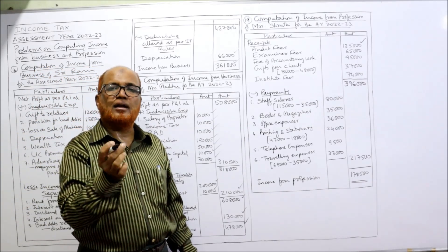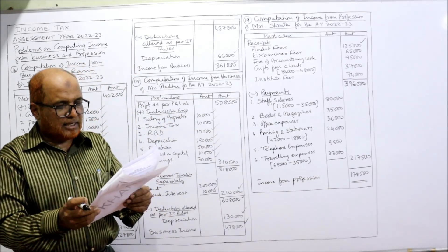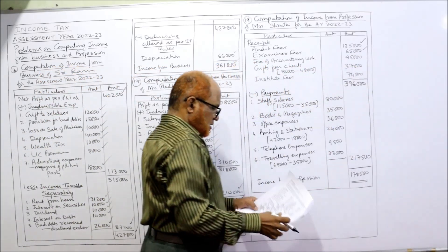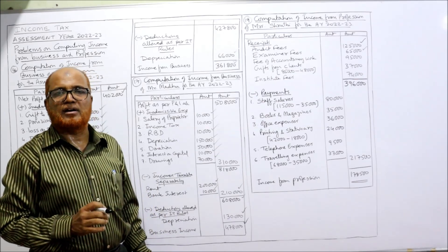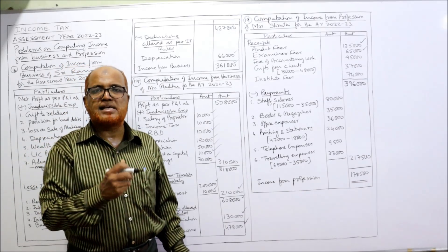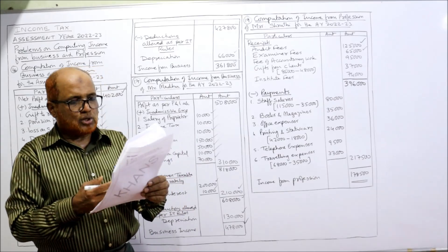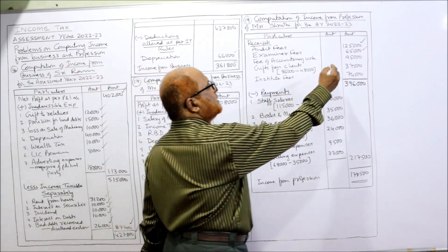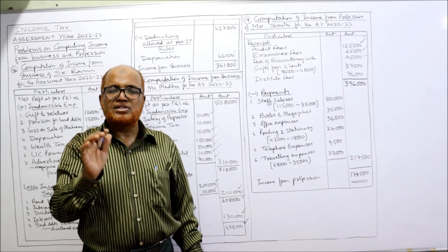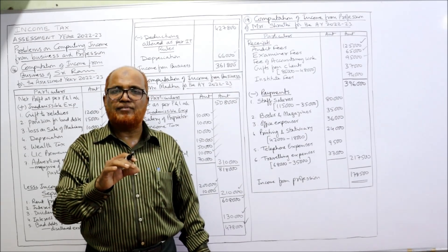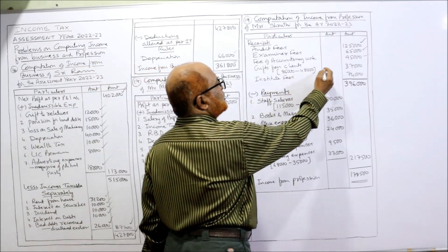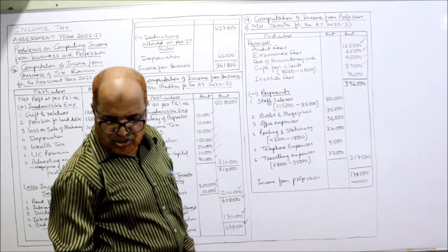Fee of accountancy work: a chartered accountant does accountancy work, audit, and examinership — all these are professional income. So fee of accountancy work 95,000 is professional income. Gifts from clients: gift received from a client is professional income. But the gift from brother-in-law is included — deduct. Out of 85,000, deduct 48,000 — so 37,000 is the professional income from gifts. Rent: taxable under income from house property, not professional income — ignore. Institute fees received: professional income — take 74,000. Interest on bank deposit: taxable under income from other sources — don't take.